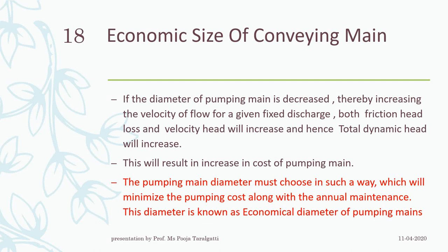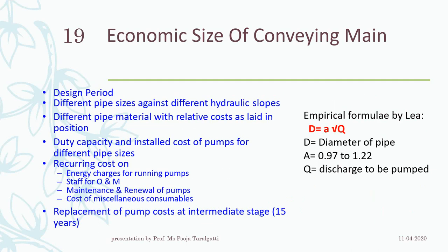In short, the economic size of the conveyance main means the main pipeline should be designed such that the diameter achieves the specific pressure required at the end of the distribution system, while also taking care of the costing and maintenance. Clubbing together the diameter size and the pipeline size, it should be economical in all aspects.